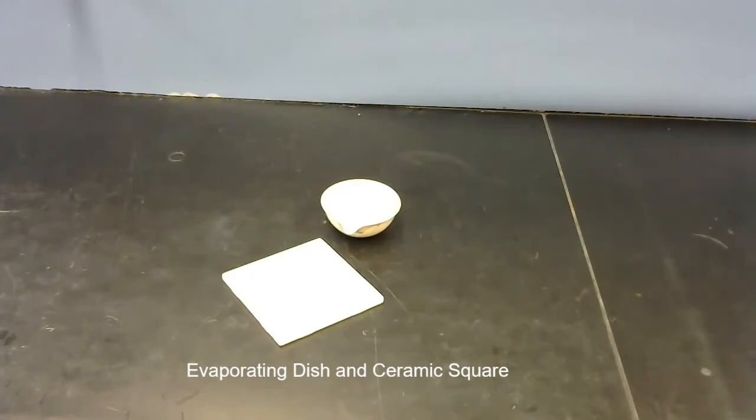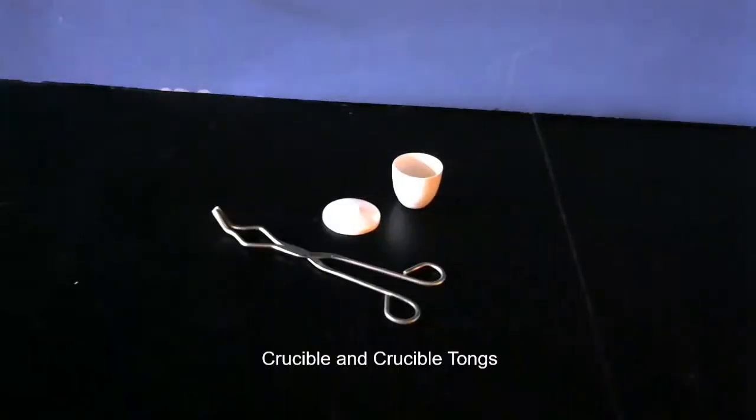What you have pictured there is a crucible with lid and tongs. You'd use the tongs to manage the lid and to lift the crucible on and off heat. You'd put what you want heated in the crucible for different labs and cover with the lid.